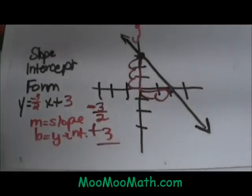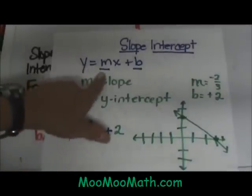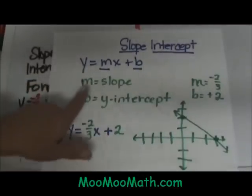Let's look at an overview of this. Here is the slope intercept form, y equals mx plus b. m is the slope, b is the y intercept.